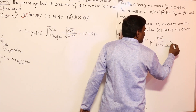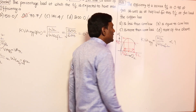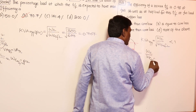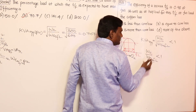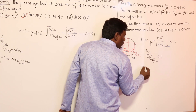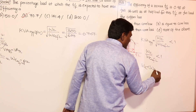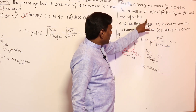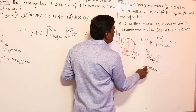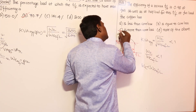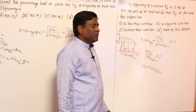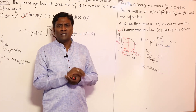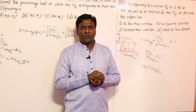Since KVA at maximum efficiency should be less than one per unit, core loss divided by full load copper loss must be less than one, meaning core loss must be less than full load copper loss. So for this transformer, full load copper loss must be greater than core loss. Problems like these can be solved simply without remembering multiple formulas.